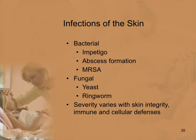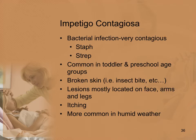For infections of the skin, we will discuss bacterial and fungal infections. The severity varies based on the patient's skin integrity, immune, and cellular defenses. Impetigo is a very contagious bacterial infection caused by staph or strep, most commonly associated with strep. It is very common in toddlers and preschoolers and typically enters through broken skin such as an insect bite or scrape. Lesions are most commonly located on the face, arms, and legs.